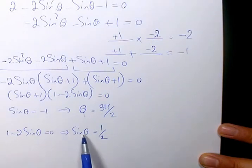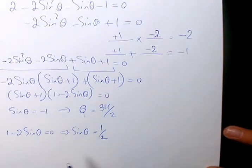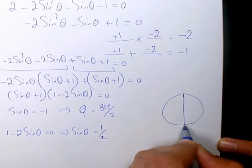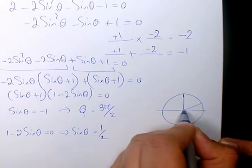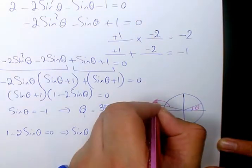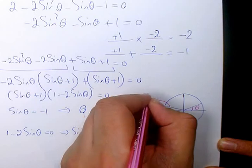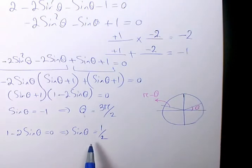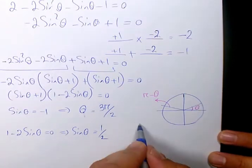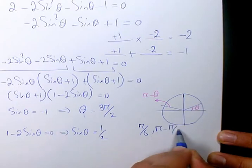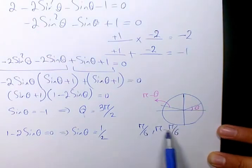For the second part, sine theta equals 1/2. We know sine is positive in quadrant 1 and quadrant 2, so there will be two answers. The quadrant 1 answer is pi over 6, since sine(π/6) equals 1/2, which is 30 degrees. The quadrant 2 answer is pi minus pi over 6.